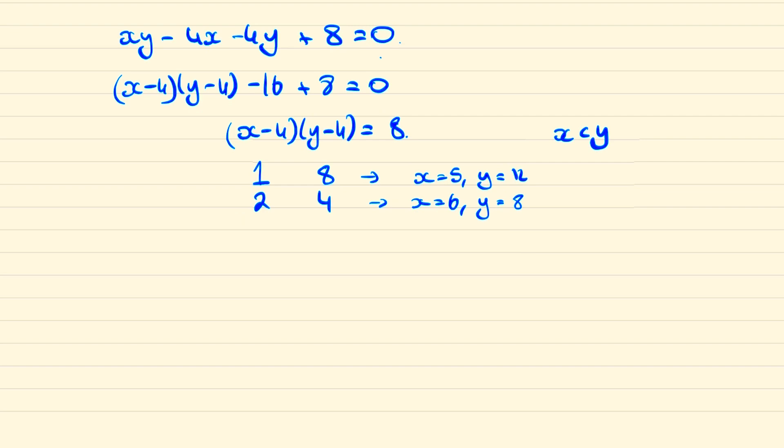Substituting both solutions back into Pythagoras' theorem we find z will be 13 or z will be 10, and so our possible triangles with the same area and perimeter are 5, 12, 13 and 6, 8, 10.